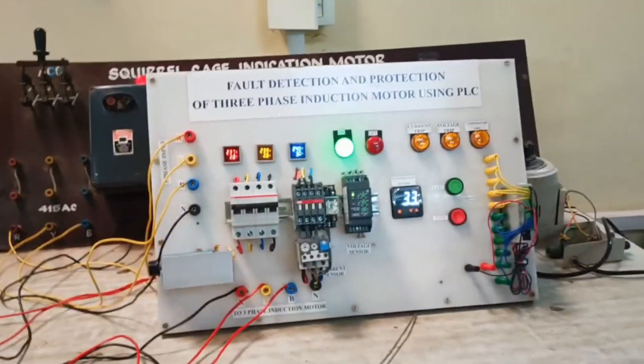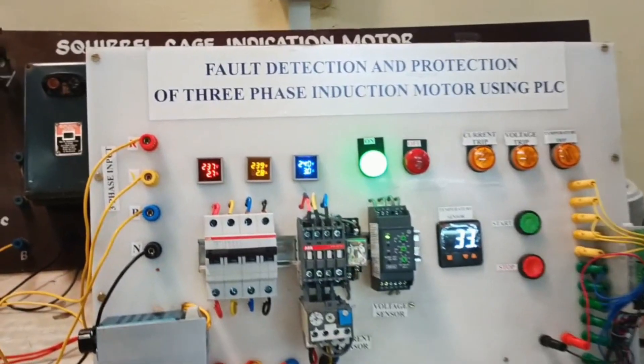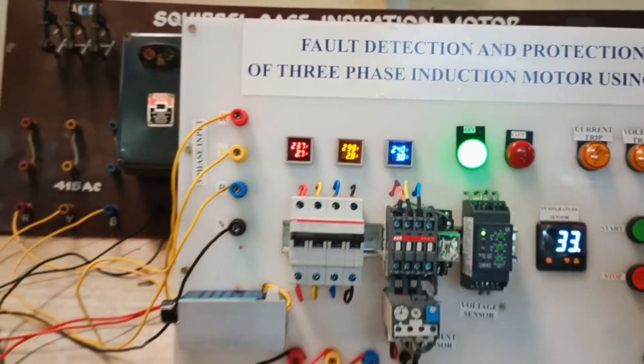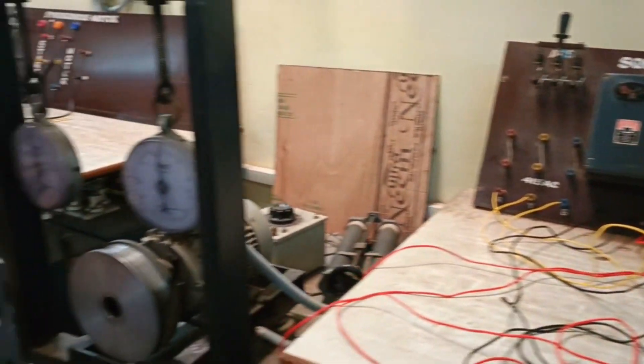So now the motor is running under normal condition. So as you can see we have 240 volt in the phase voltage. So now we increase the load through the motor.